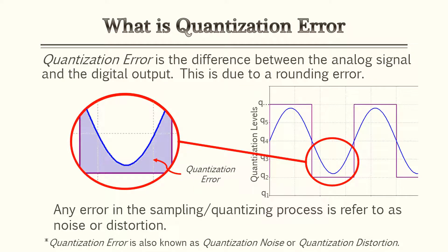For this lesson we're going to be focusing on quantization error. This lesson goes hand-in-hand with the pulse modulation lesson. Quantization error is the difference between the analog signal and the digital output — this is due to a rounding error. Any error in the sampling or quantization process is referred to as noise or distortion. Some textbooks or PE references may refer to quantization error as quantization noise or quantization distortion.